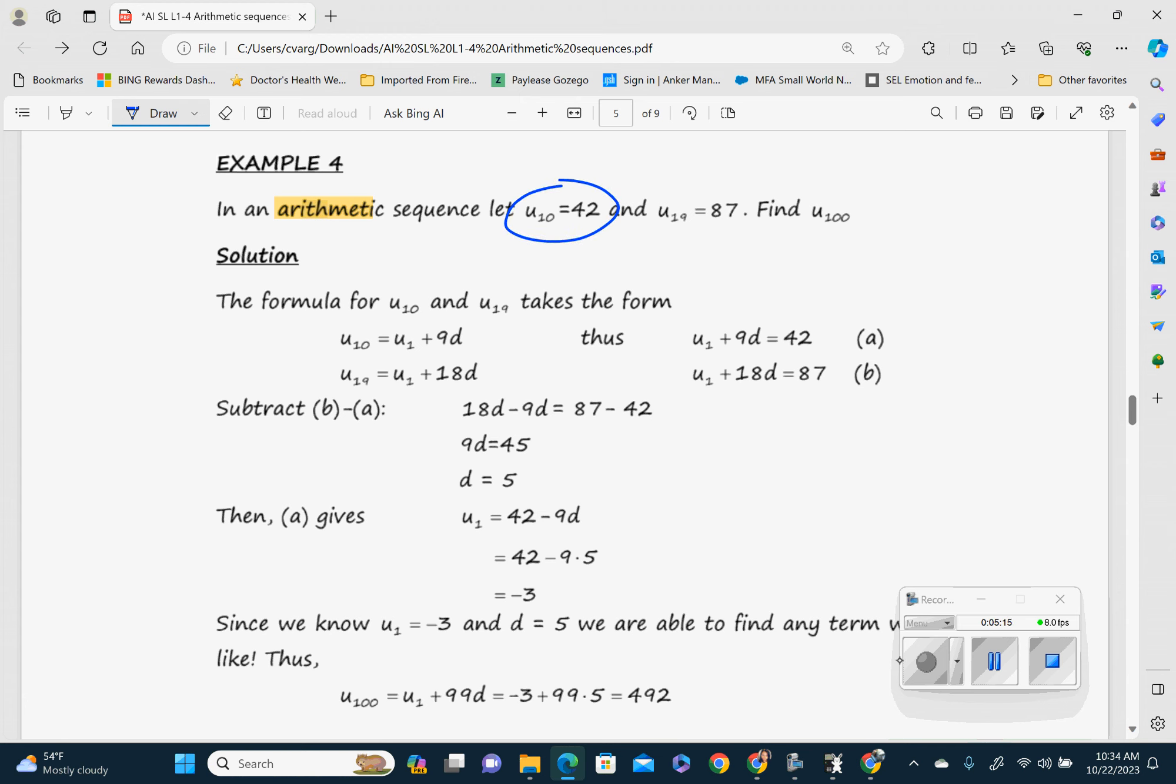All right. So in this one, they're telling you U10, like the 10th term is 42, and U19 is 87. So we have U10 is 42, and U19 is 87. So basically what we're going to do is we're going to set up an equation. So here's our formula. UN is equal to U1 plus N minus 1 times our D. So we don't know what this is. We don't know our D here. And we have to find U100. We'll get there in a second. We also don't know our first term. So we have two unknowns.